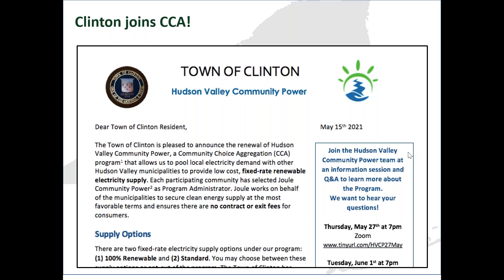This is the welcome and opt-out letter that residents and small businesses will receive before community choice aggregation goes live. It explains what the program is about, information on how to find out more, how to call the Hudson Valley Energy helpline, and walks you through the supply options. This letter gives you notice of the 30-day opt-out period — meaning if you don't want to be in the program at all, within that 30-day period you can opt out.